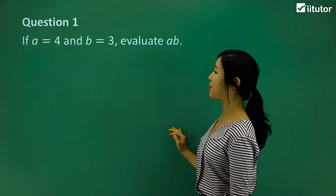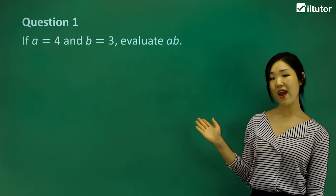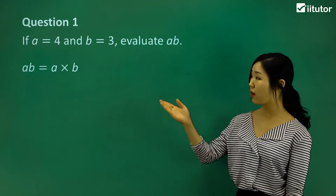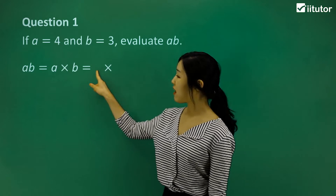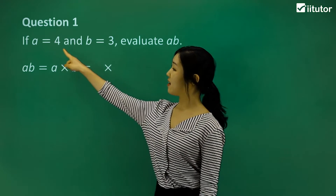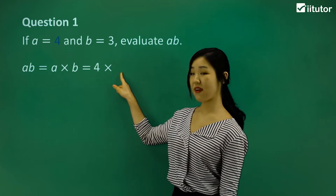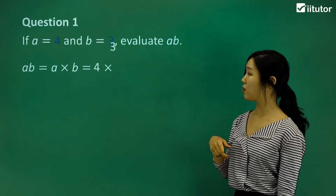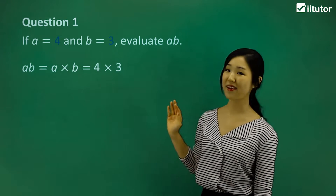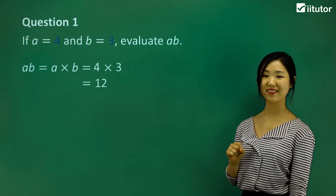Question 1: if a is 4 and b is 3, evaluate ab. So ab is a times b, isn't it? I'm going to replace a with its given value and b with its given value. a is 4, so I replace the blank with 4. b is 3, so I replace the blank with 3. So what's 4 times 3? Everyone should be able to tell me it's going to be equal to 12. That would be the final outcome — much more simplified because we've got the given values.